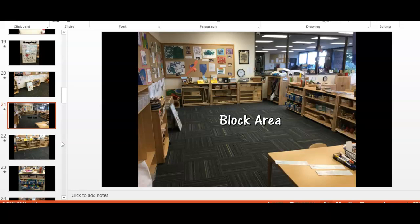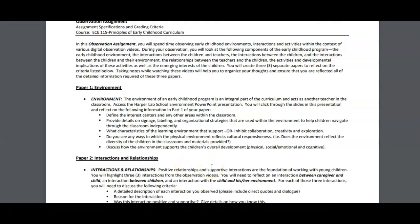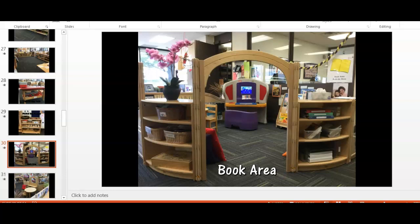Please be sure to reflect on all three of those ideas. The fourth question asks you to reflect on ways in which the physical environment reflects cultural responsiveness. This means: does the environment reflect the diversity of the children in the classroom and materials provided? Imagine this classroom full of children and the diversity that population might include. Look at the materials, the pictures hanging on the walls or displayed on the shelves, and the dolls in the house area. Do you see items that reflect the diversity of the children in the classroom?